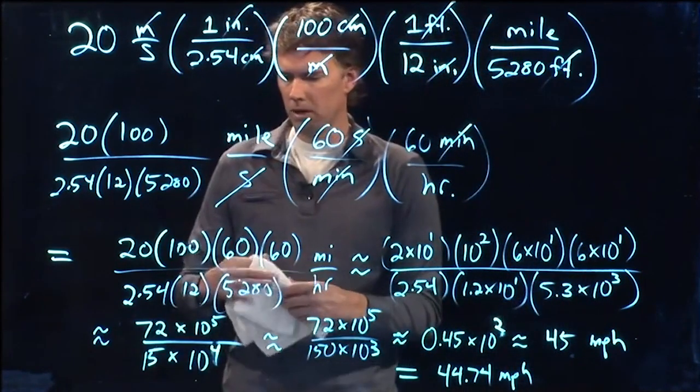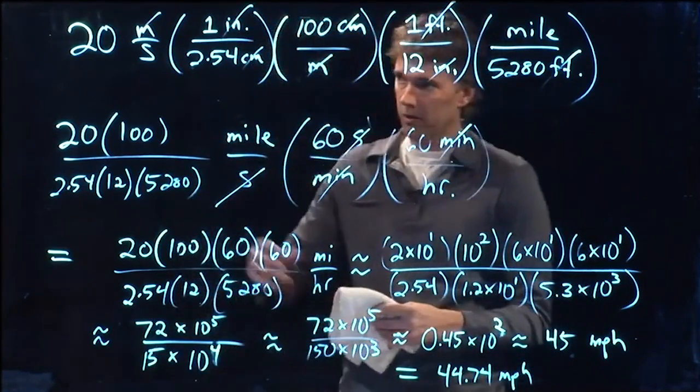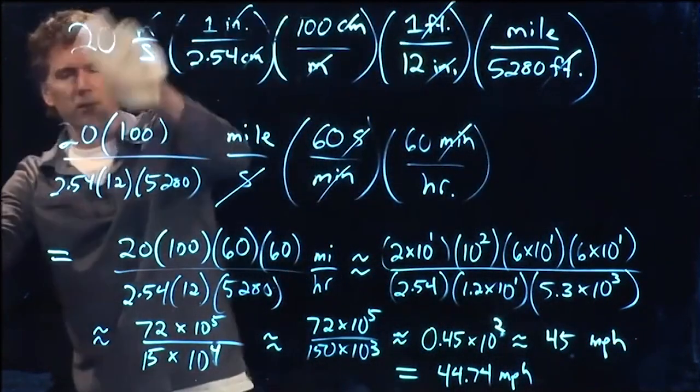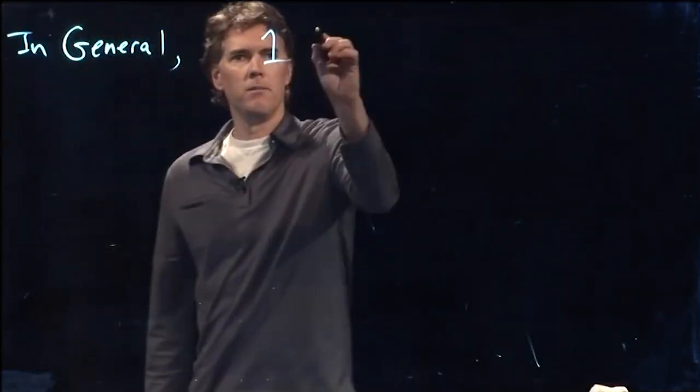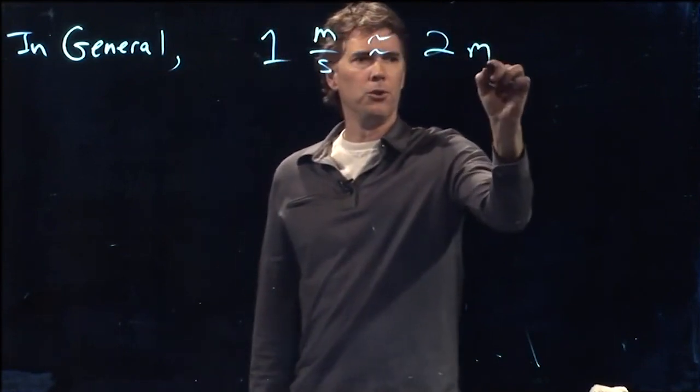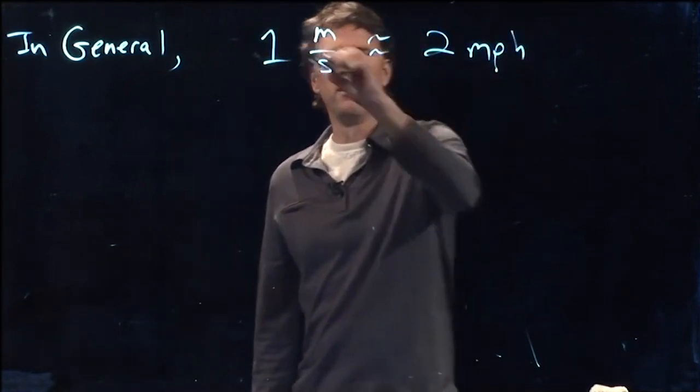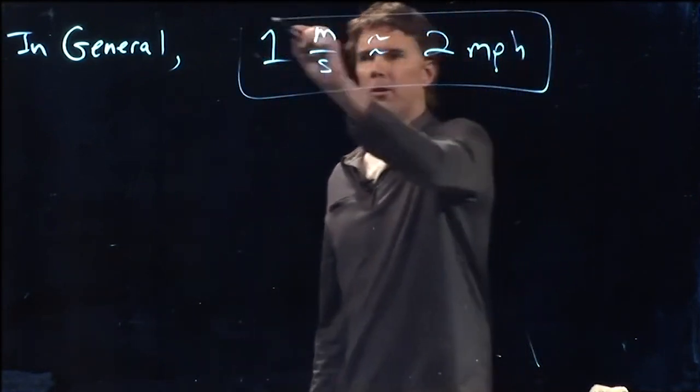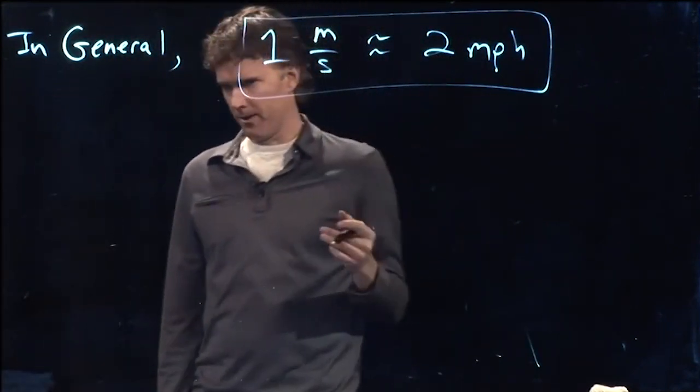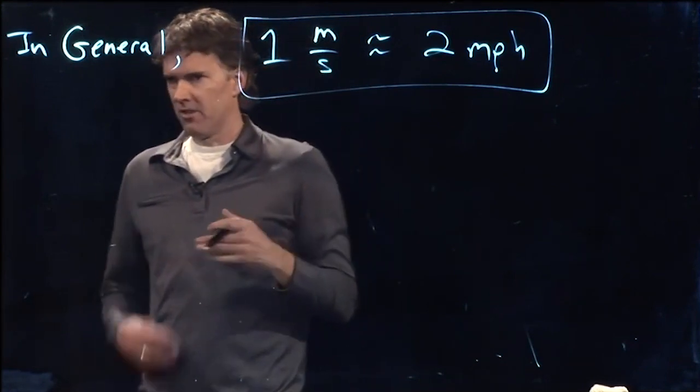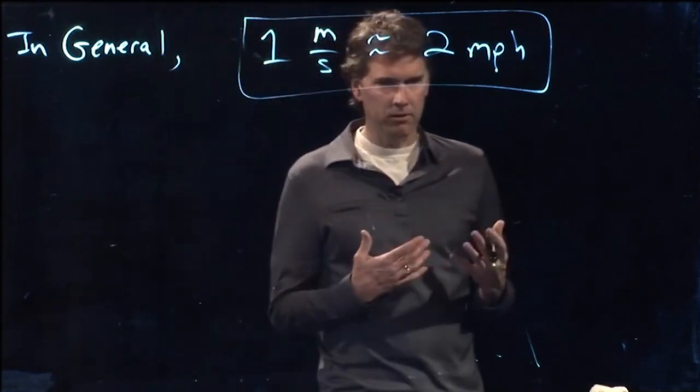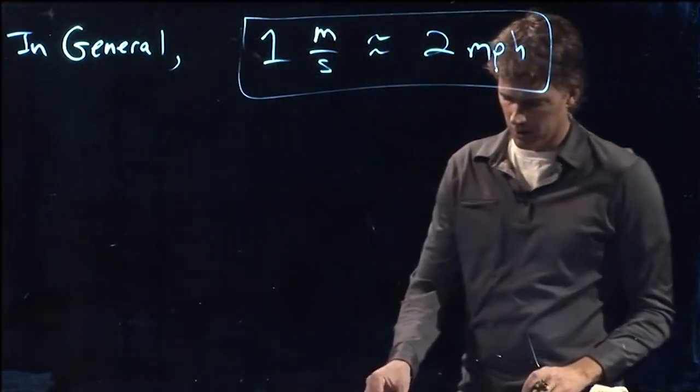And let's come up with a way to remember this. 20 went to about 44. So let's approximate this. 1 meter per second is approximately 2 miles per hour. So if you are running at 20 meters per second, it's approximately 40 miles per hour. Just double it. And this will help you make sense of the answers that you get on your homework problems.